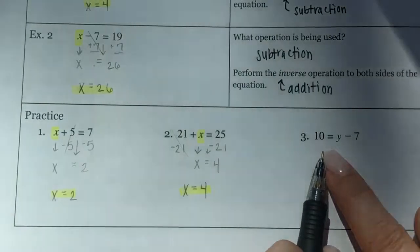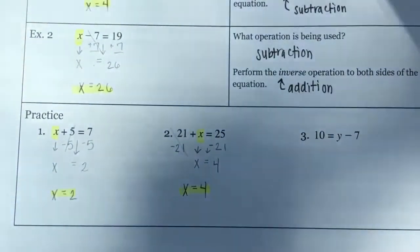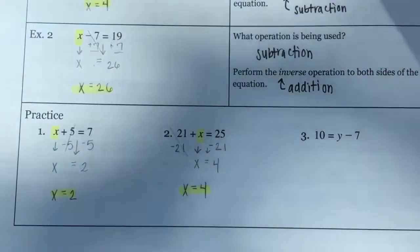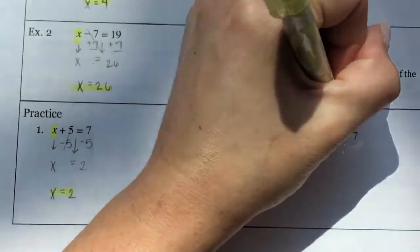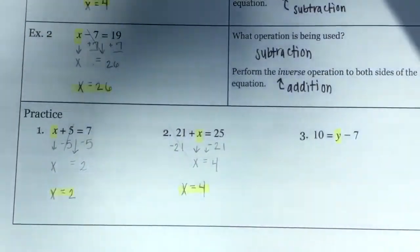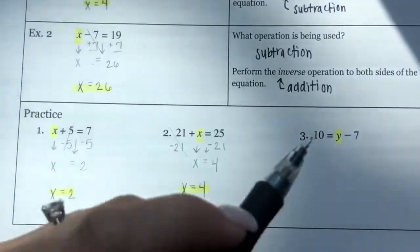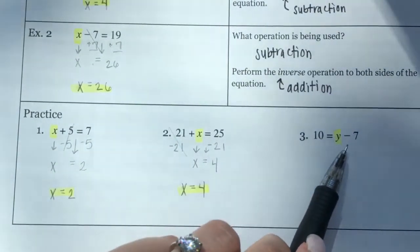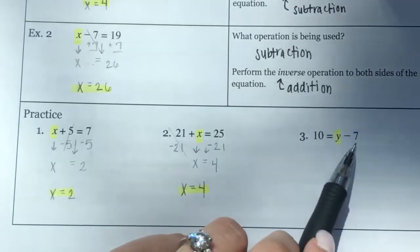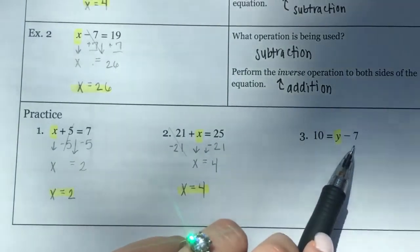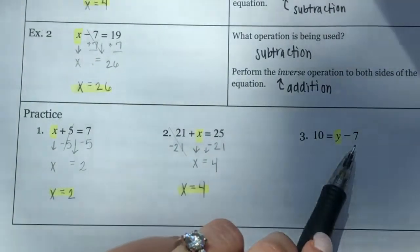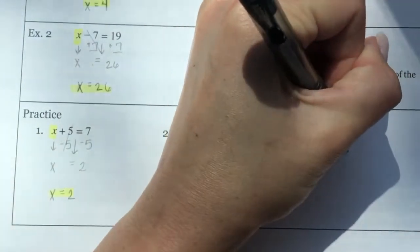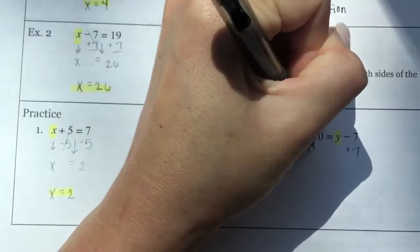For practice problem 3: 10 = Y - 7. We have a different variable, but it still works the same way — we're still solving for that unknown variable. The operation being done to Y is subtracting 7, so the inverse of subtraction is addition. To solve this equation, I need to add 7 to both sides.